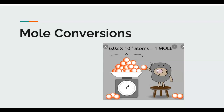This lesson is going to discuss mole conversions. Just as a reminder, the mole is a quantity — just like the word 'dozen' represents 12 items, a mole represents 6.02 times 10 to the 23rd atoms. That is a quantity of how many atoms, ionic compounds, or molecules we have.